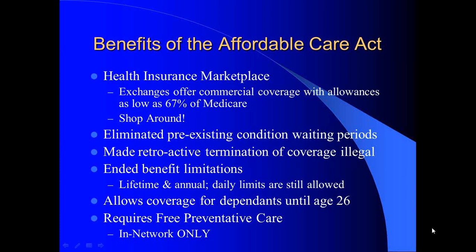The ACA also eliminated pre-existing condition waiting periods. In the past, patients with pre-existing conditions like diabetes or cancer who had any lapse of coverage exceeding 63 days would be subject to a waiting period lasting anywhere from 6 to 18 months, during which no services related to that condition were payable — the entire responsibility became the patient's. Now that continuous coverage is required, those clauses can no longer be enforced, allowing immediate coverage for all types of services.